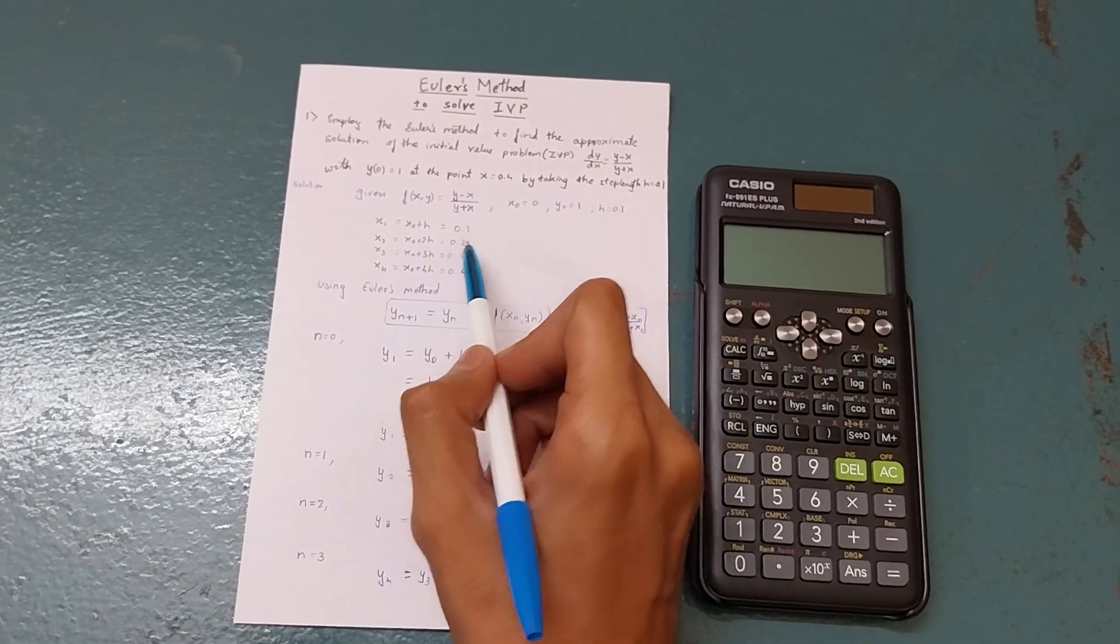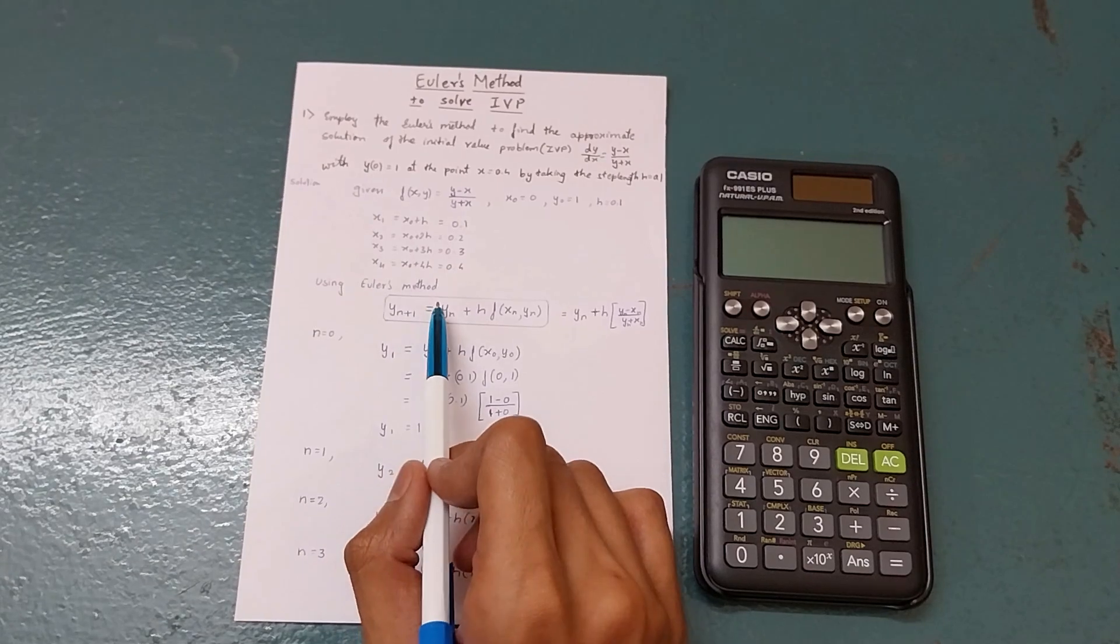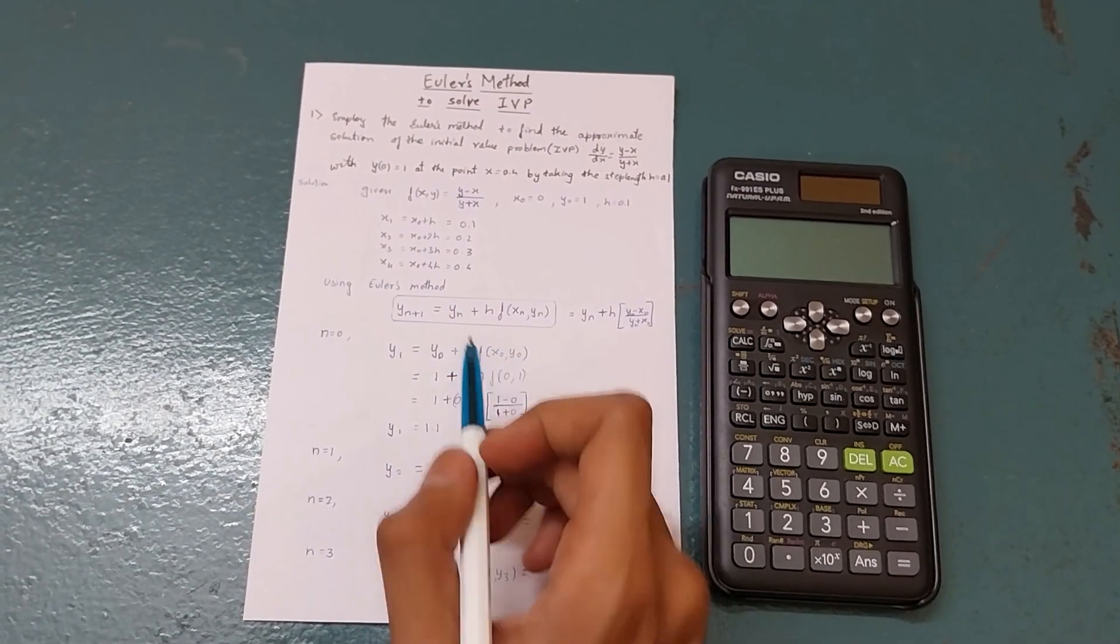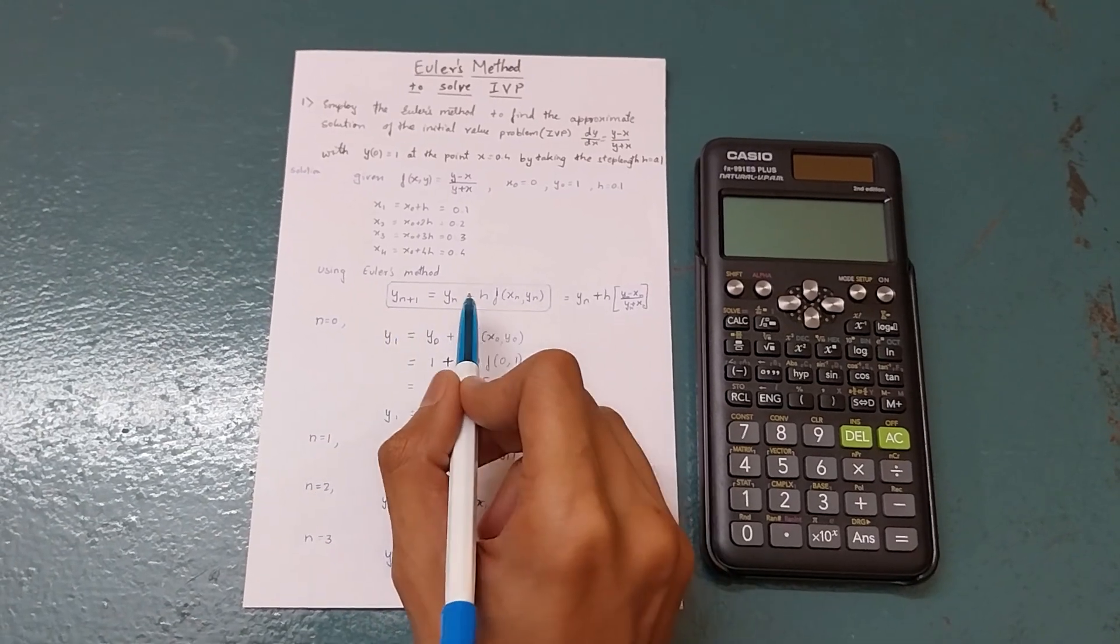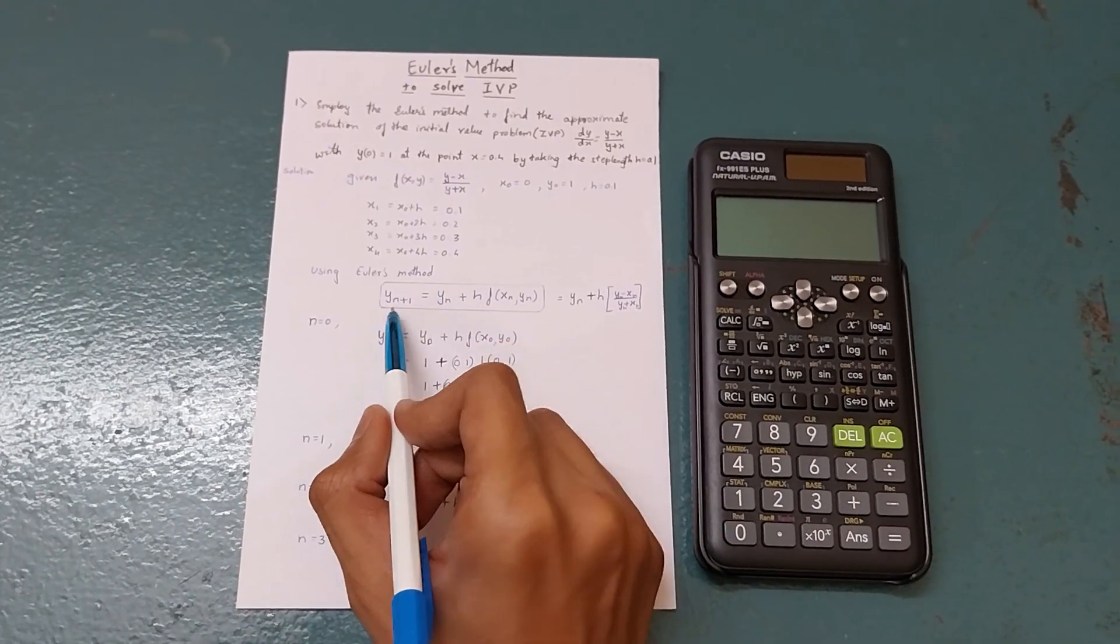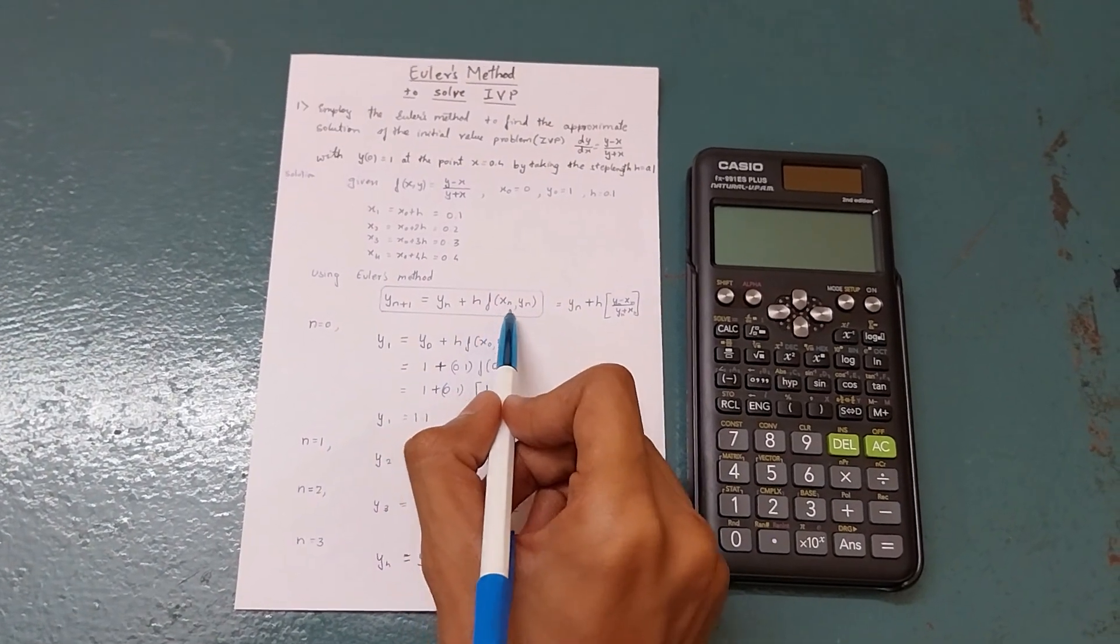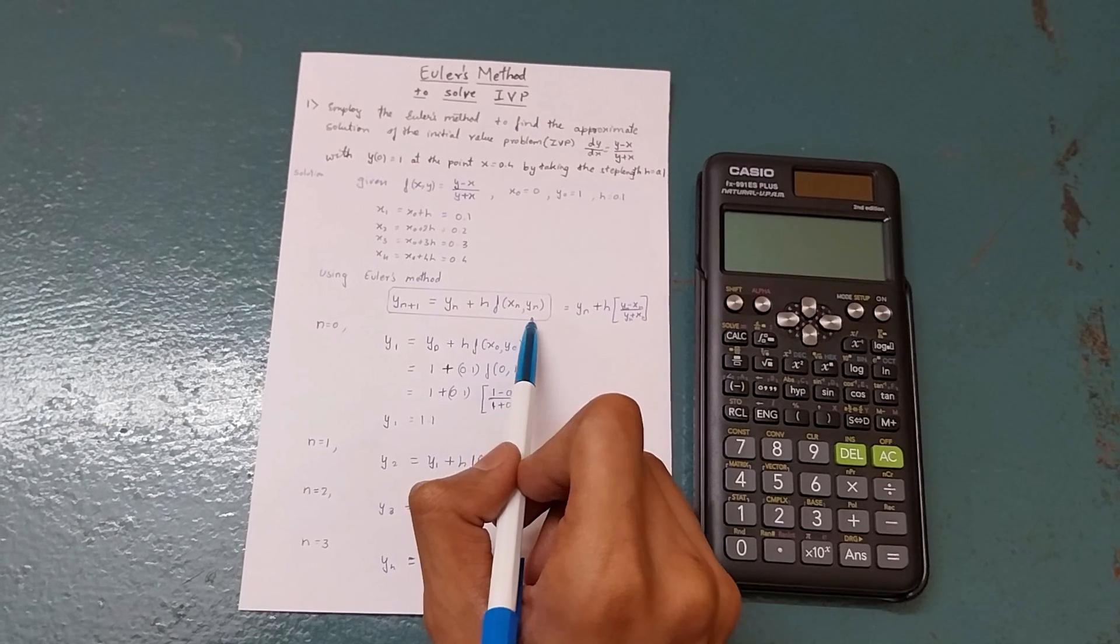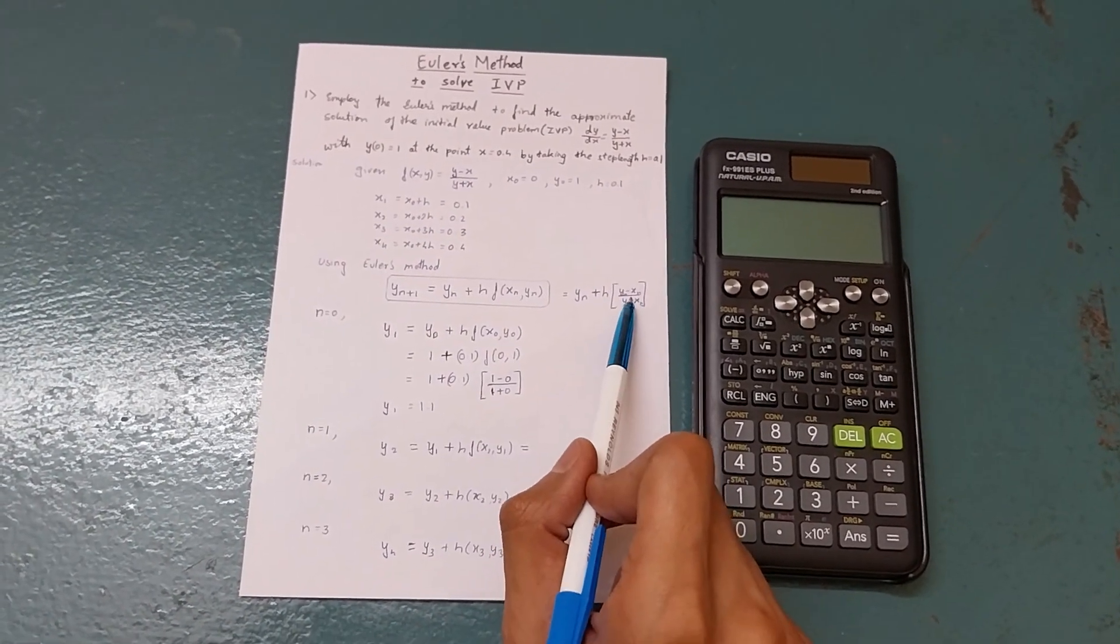I will fill x1 equals x naught plus h, x2 equals x naught plus 2h until I get 0.4. Using Euler's method, the equation is y of n plus 1 equals y of n plus h into f of x n comma y n.